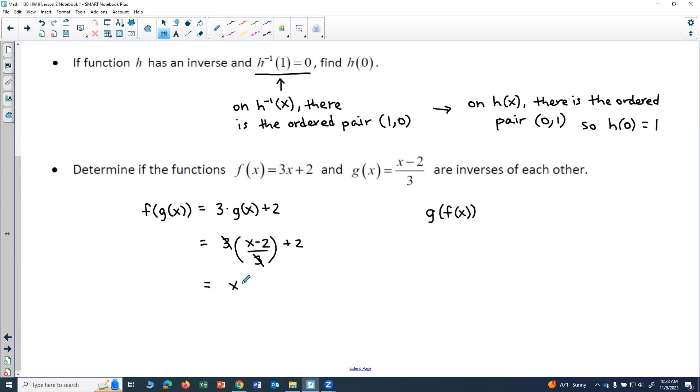So I end up with x minus 2 plus 2, which just gives me an x. So we're looking good so far.